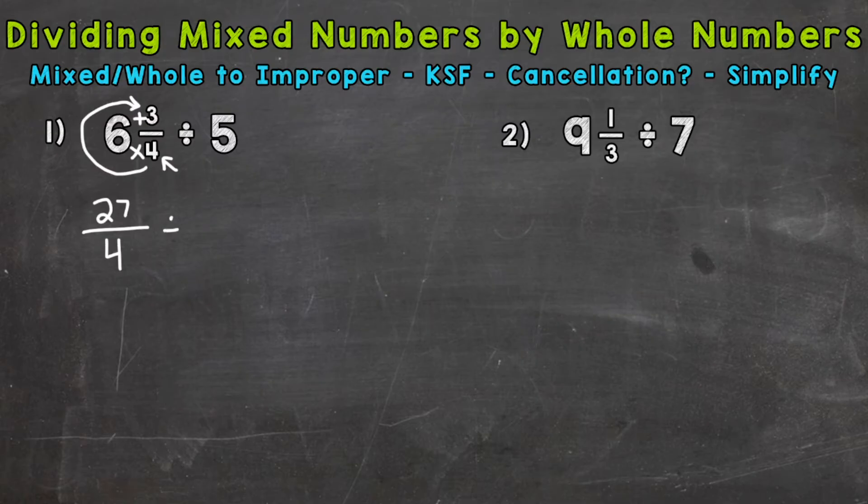Bring down our division sign. And then for any whole number, we can just put it over 1 in order to put it into fractional form. So now that we have just numerators and denominators, we're ready to move to the next step, KSF.